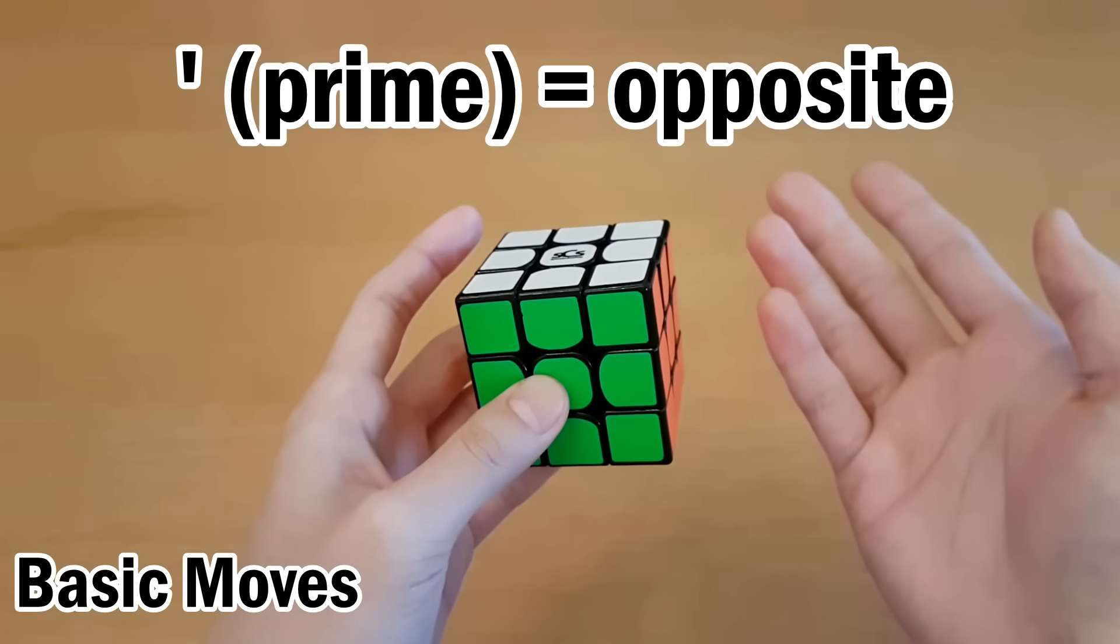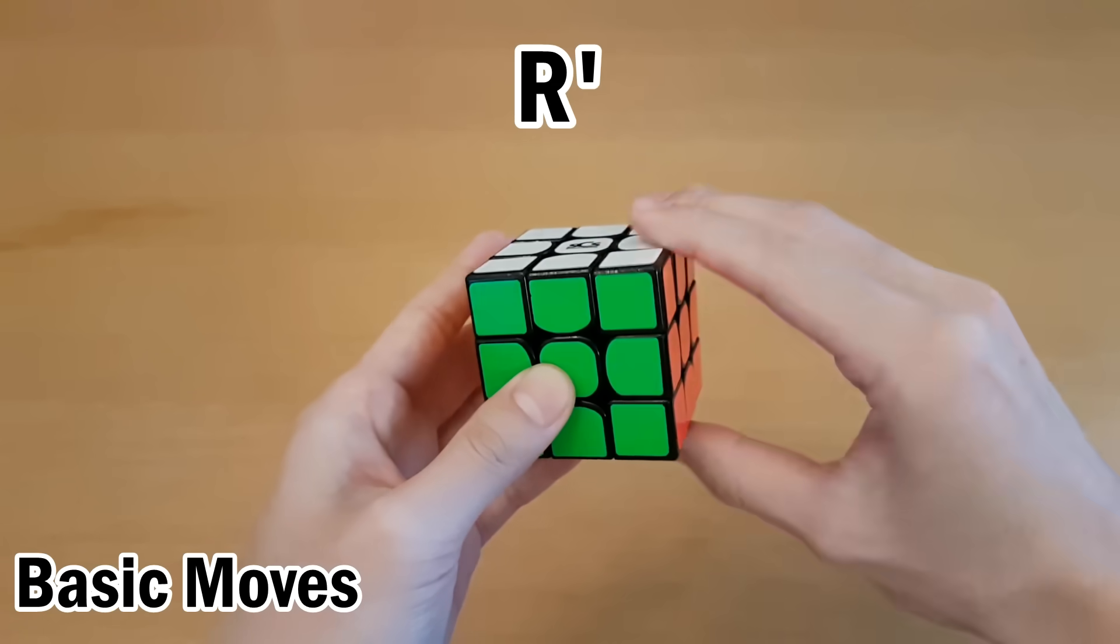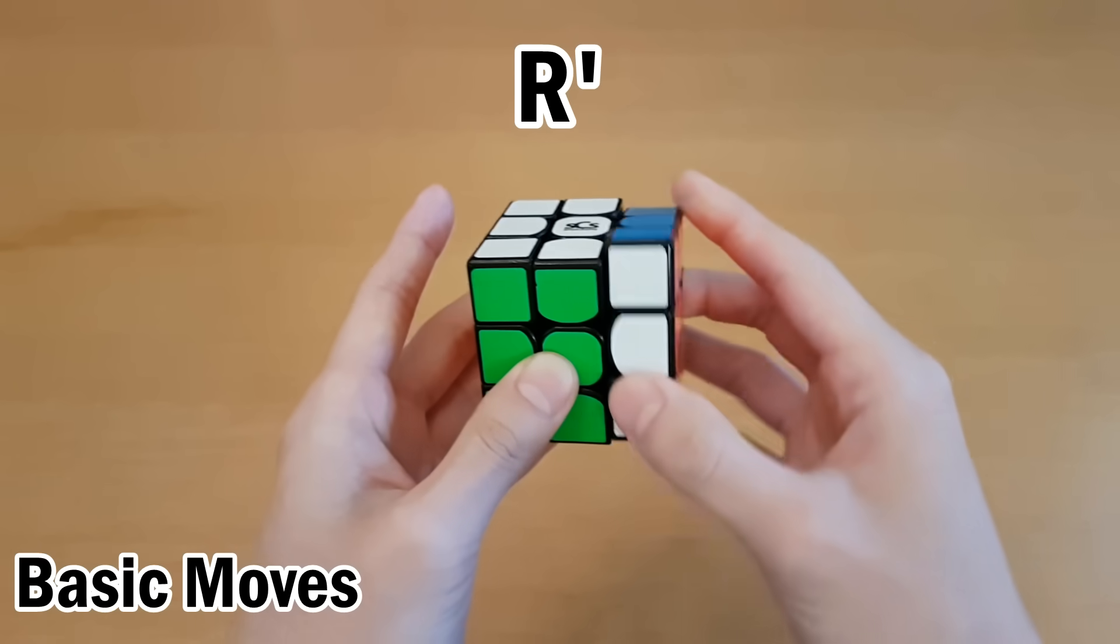The apostrophe means prime, and it means to turn in the opposite direction. So R' would not go this way because that's R. R' goes the other way.